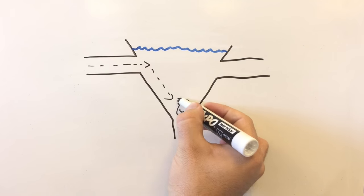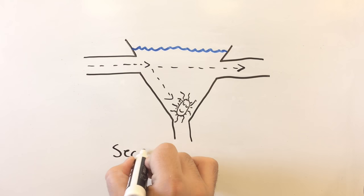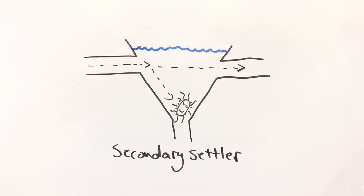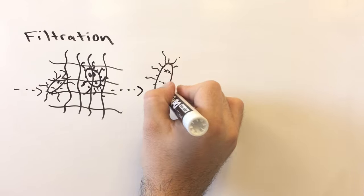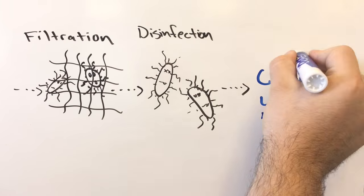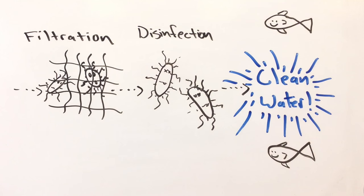By letting the microbes sink, we can separate them from the liquid and remove the BOD from the water. This, in combination with the initial settling, can remove more than 85 percent of the BOD. After this, the water is filtered and disinfected to make it safe for release back into the environment. And that's what happens when you flush.